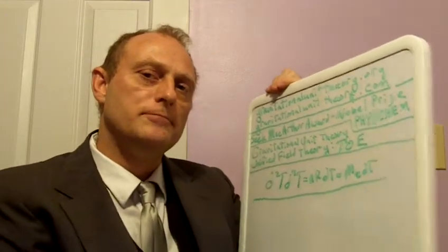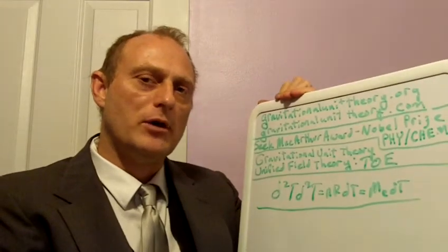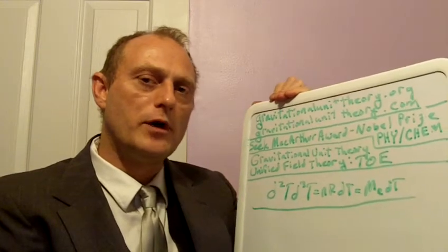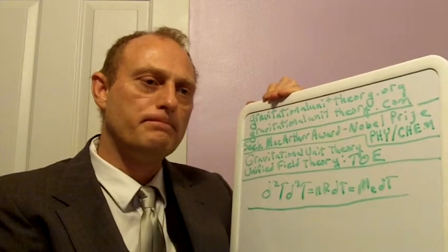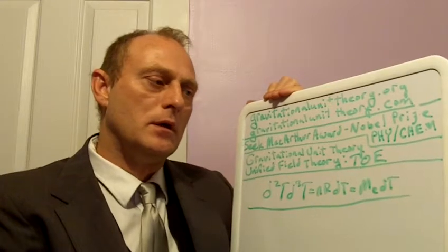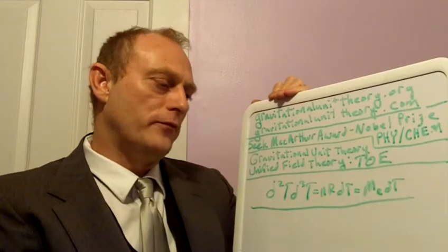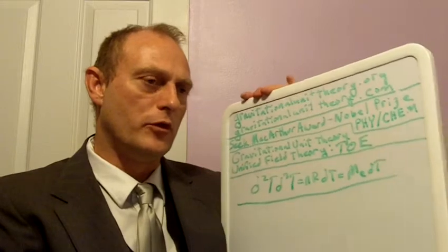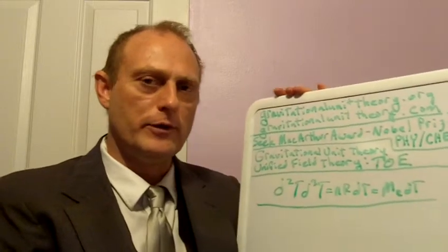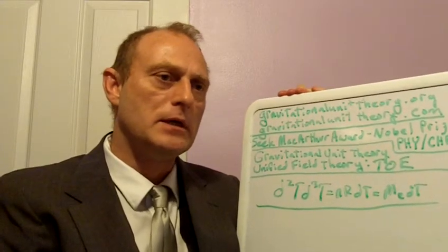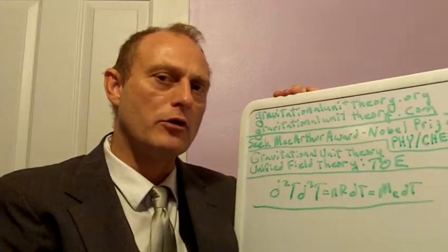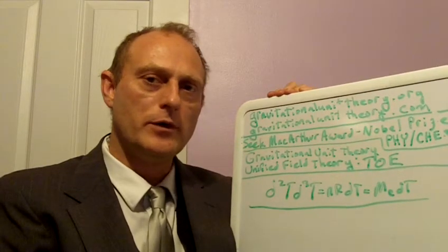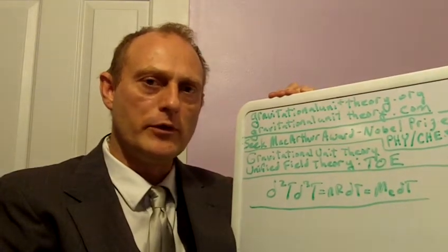Hello, my name is Todd Gooch and my goal is to win the MacArthur Award and the Nobel Prize in Chemistry and Physics. Today what I would like to do for you is to propose the Theory of Everything, which I've written in my new book Gravitational Unit Theory, Unified Field Theory, The Theory of Everything.